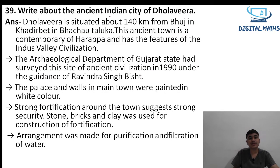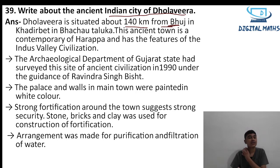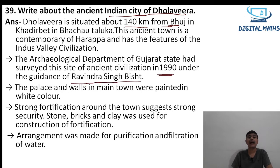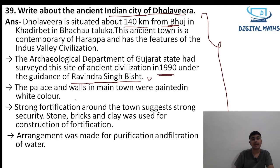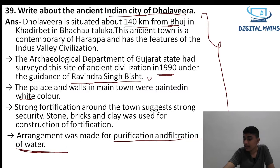Question 39: Write about the ancient city of Dholavira. Dholavira is located in Bhachau taluka of Bhuj district. It is an ancient town of the Harappan civilization. The Archaeological Department of Gujarat state surveyed the site of ancient civilization in 1990 under the guidance of Ravindra Pustin Bisht. The palaces and walls in the main town were painted white, and stone bricks and clay were used for construction and fortification. Arrangement was made for purification and filtration of water.